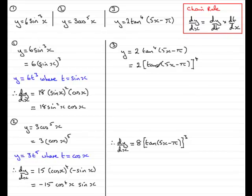Now I need to do this bit on the end. I need to differentiate what I called t. I need to find dt/dx for tan(5x - π). The trouble is it's just not tan x, it's got this 5x - π attached. So to get around this I need to use the chain rule again.